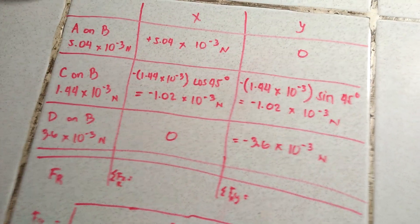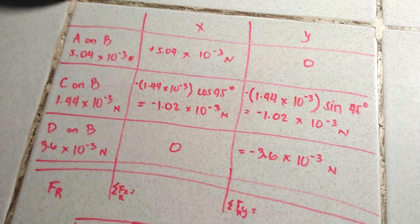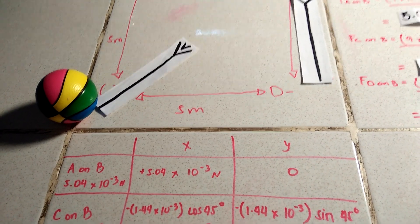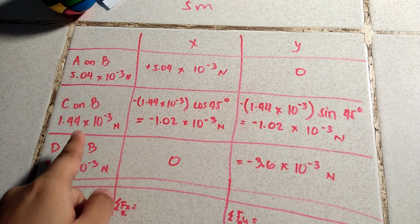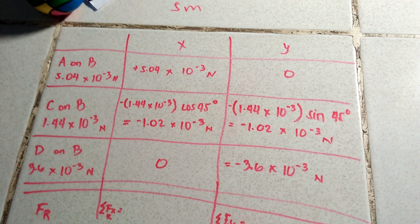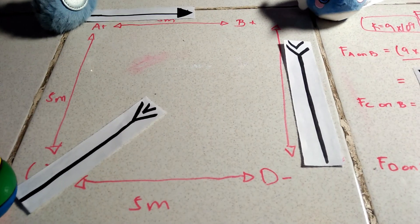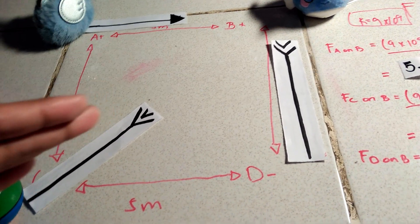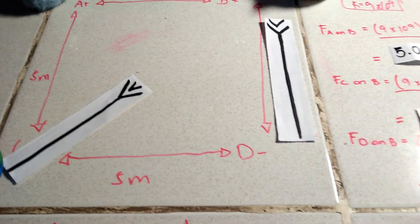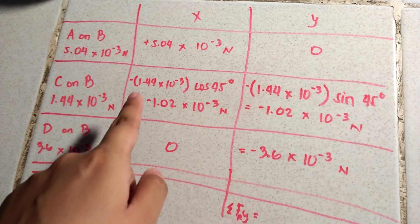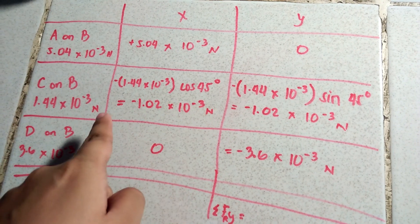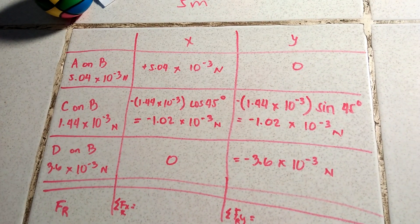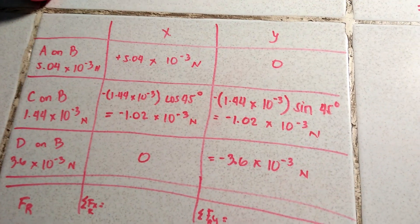And for C on B, well this one, this is where it gets a little bit tricky. Because C on B is a diagonal. It's a hypotenuse. So we calculated it as 1.44 times 10 to the negative 3. Now the thing about squares is that its hypotenuse will always have an angle of 45 degrees. Because it's half of the circle, half of the square. So that's like 45 degrees. So what we used here is the value of F_E, cosine 45. So that's negative 1.02 times 10 to the negative 3. And the y value, instead of using cosine, we're using sine. And basically it has the same answer.